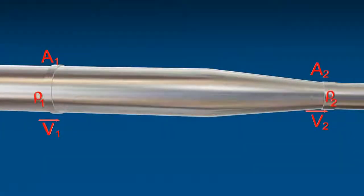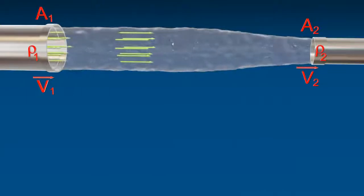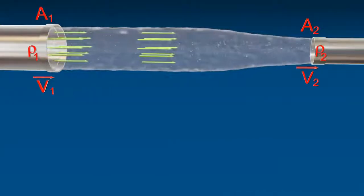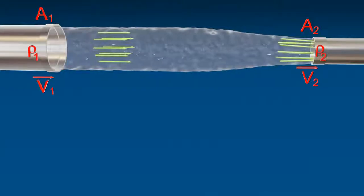Consider a fluid moves through a tube of area of cross-section A1 and A2 respectively. The volume of water entering A1 per second and the volume of water leaving A2 per second.